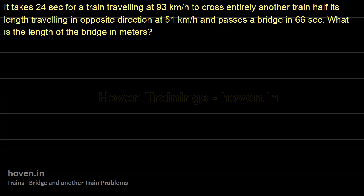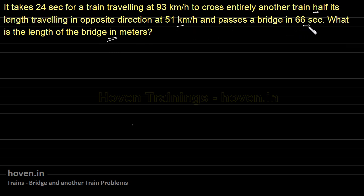Let us take a few examples where a train crosses another train or a train crosses a bridge. Our first example: it takes 24 seconds for a train traveling at 93 kilometers per hour to cross entirely another train half its length, traveling in the opposite direction at 51 kilometers per hour, and passes a bridge in 66 seconds. What is the length of the bridge in meters?